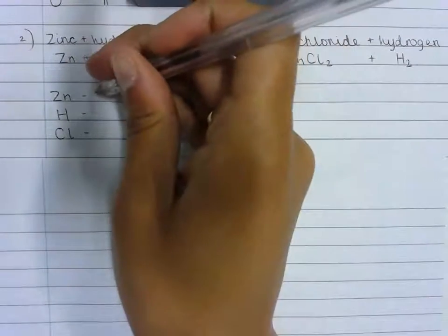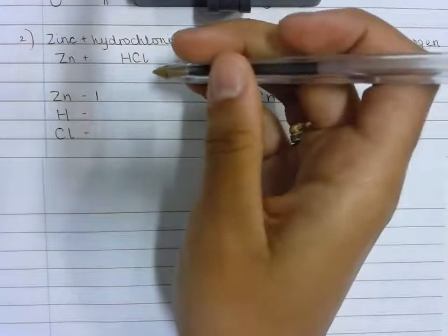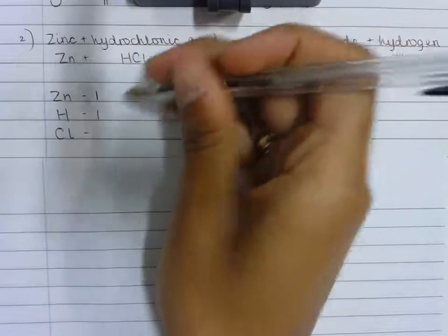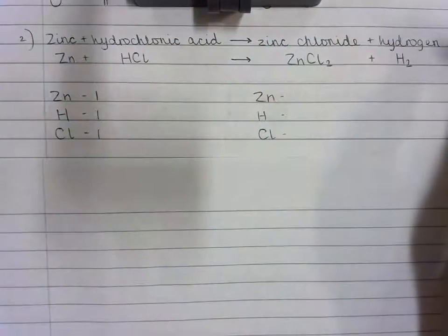There is one zinc atom, one hydrogen atom, and one chlorine atom on the reactant side.